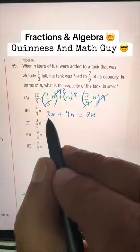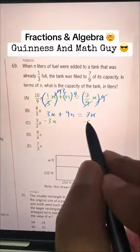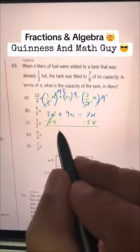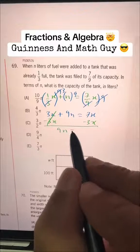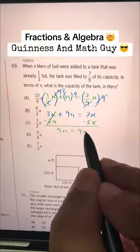Now, let's subtract 3X from both sides. This is gone. 9N is equal to 7 minus 3 is 4, so 4X.